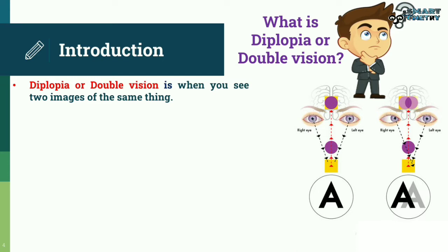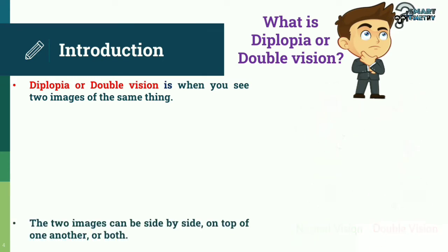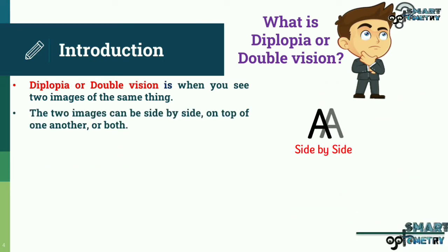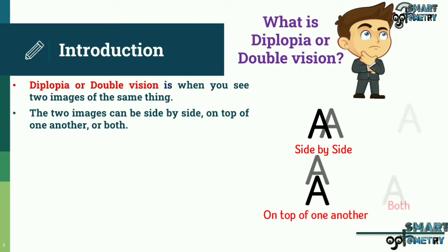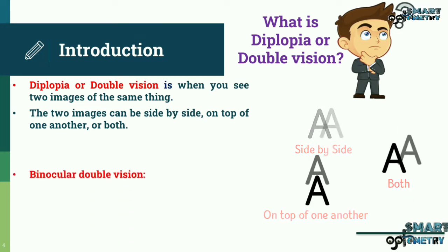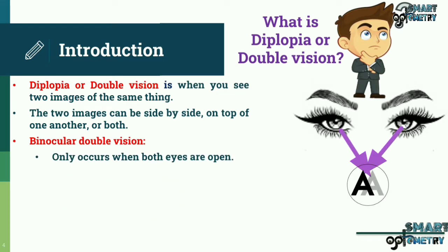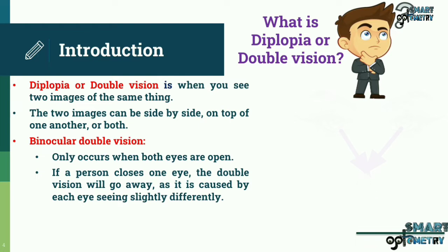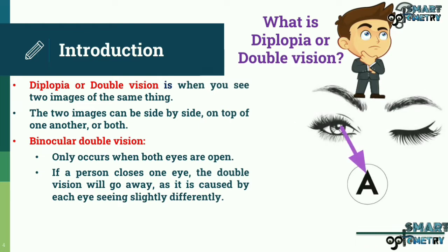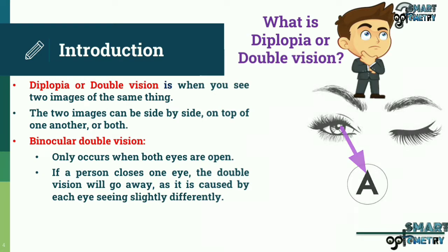Diplopia or double vision is when you see two images of the same thing. The two images can be side by side, on top of one another, or both. Binocular double vision only occurs when both eyes are open. If a person closes one eye,